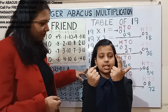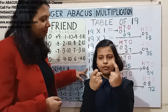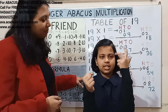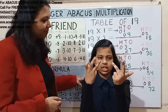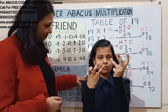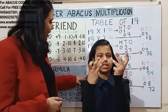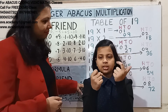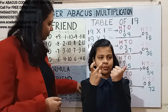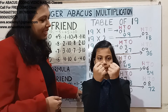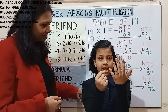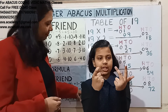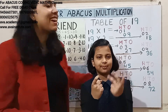19 sixes are: 1×6 is 6, 9×6 is 54 — answer is 114. 19 sevens are: 1×7 is 7, 9×7 is 63 — answer is 133. 19 eights are: 1×8 is 8, 9×8 is 72 — answer is 152. 19 nines are: 1×9 is 9, 9×9 is 81 — answer is 171.